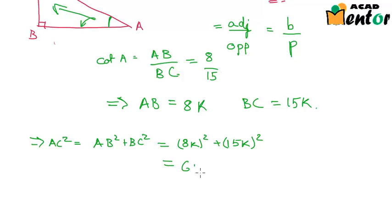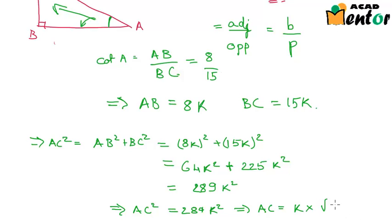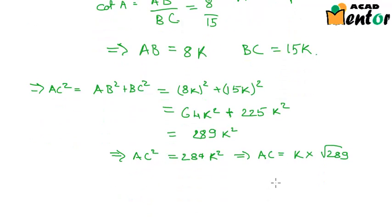Now this would further be equal to 64K square plus 15 square is 225 into K square. On adding this we would have 289 K square. So we can see that AC square is 289 K square, or AC is equal to K into under root 289. And we know that 289 is the square of 17. So this gives us AC as 17K.